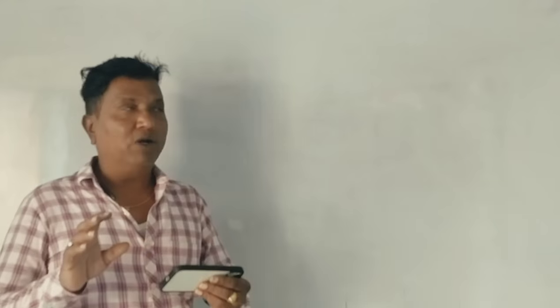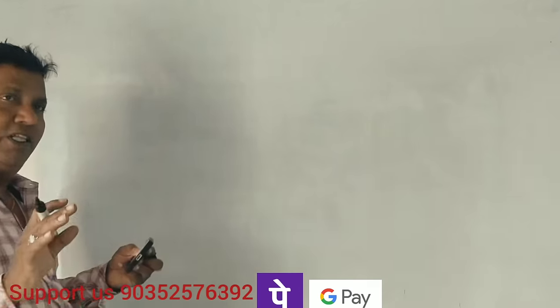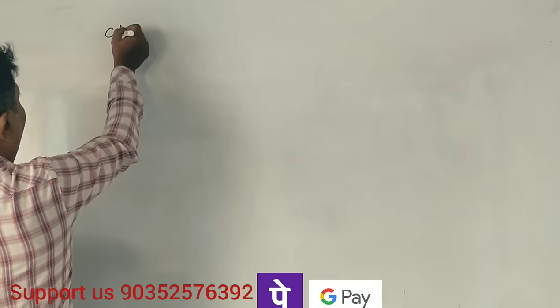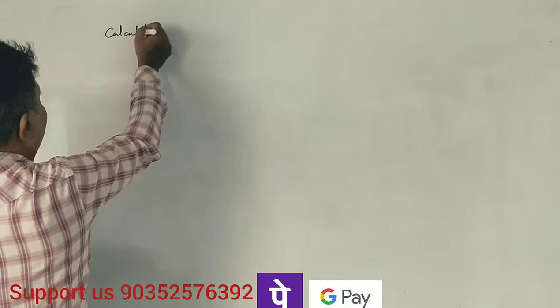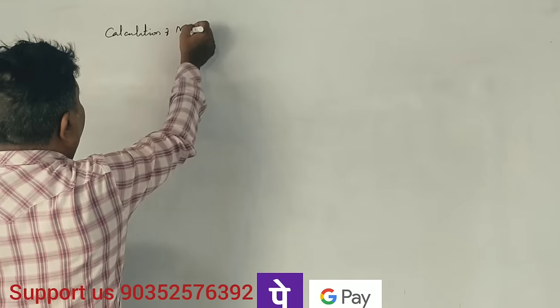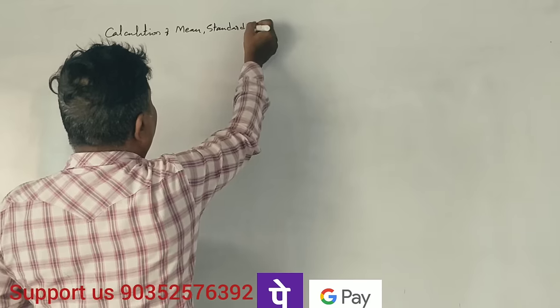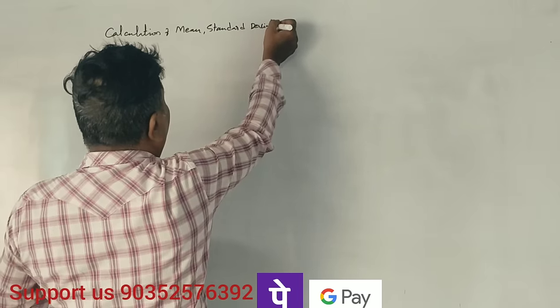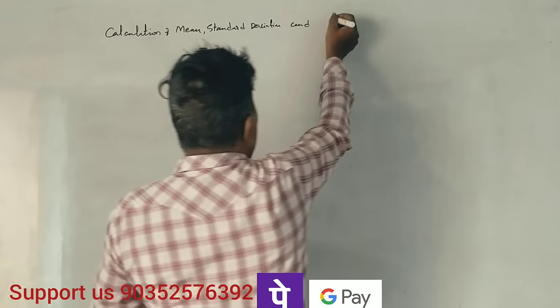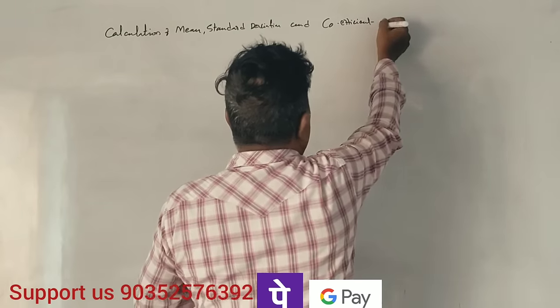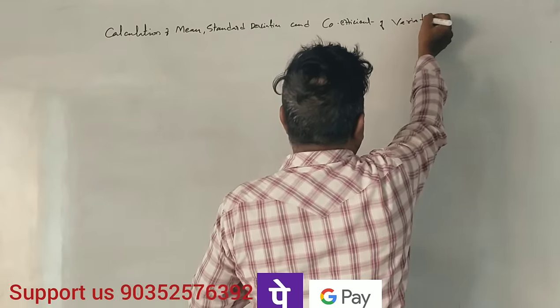To determine which company is more risky, we will calculate three things: the mean, the standard deviation, and the coefficient of variation for both companies.